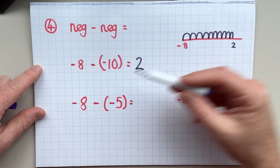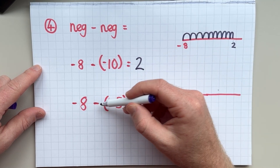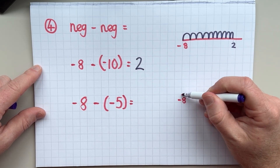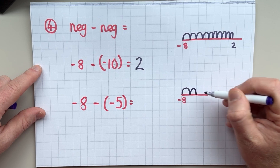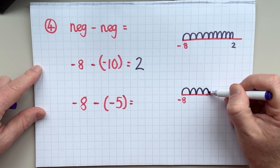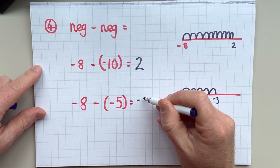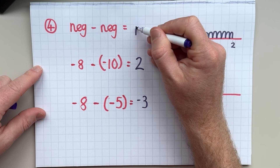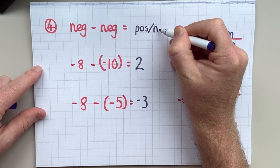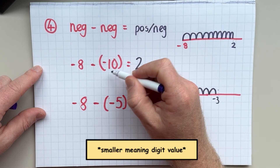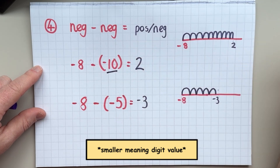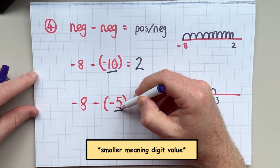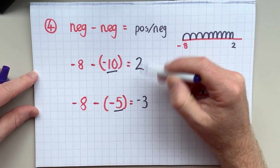In the next example, we're again starting at negative eight and we're going to take away negative five. Remember, when we have two negatives together like that, it changes this into a positive. So we have negative eight plus five: negative seven, negative six, negative five, negative four, negative three. The answer is negative three. So if you have a negative number and you are taking away a negative number, you can get a positive answer but you can also get a negative answer. The general rule is: if the number being subtracted is larger than the starting number, you get a positive outcome; if it's smaller, you get a negative number.